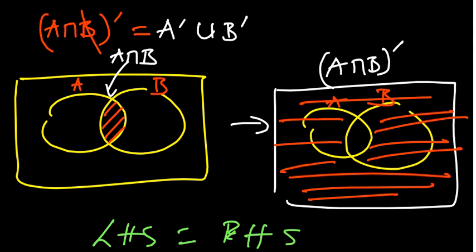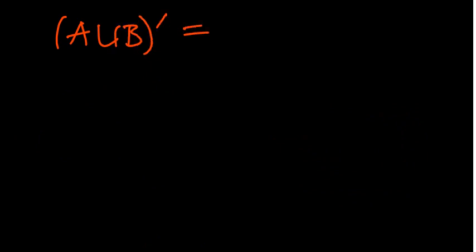Your exercise is now to prove the other De Morgan's law: A union B complement is equal to A complement intersection B complement. Prove by shading.